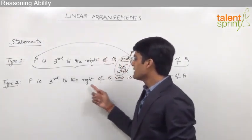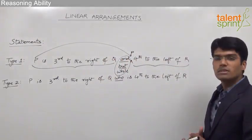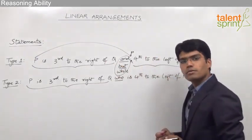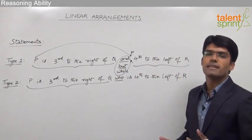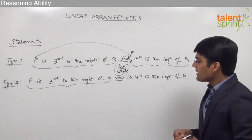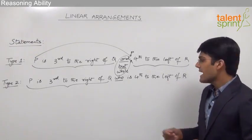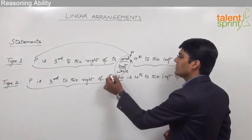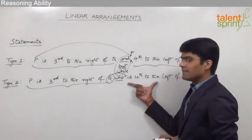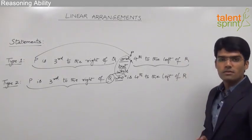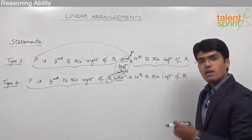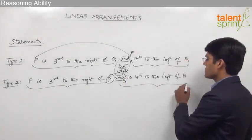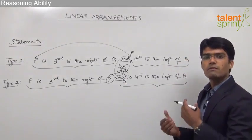The second type of statement is: 'P is third to the right of Q who is fourth to the left of R.' This can also be divided into two parts. The first part is P is third to the right of Q. For the second part — fourth to the left of R — since the word 'who' is used, we refer to the immediate preceding person, which is Q. So the second part is Q is fourth to the left of R, and Q can be arranged accordingly depending on whether they are facing north or south.